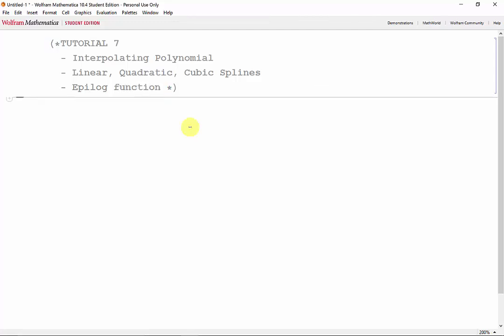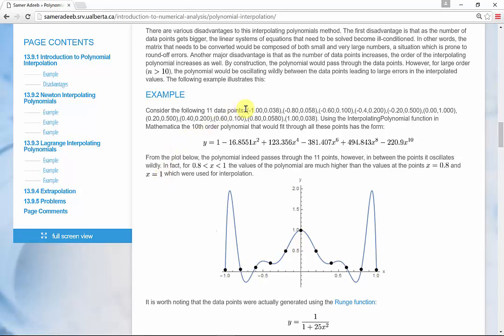The easiest way to enter relatively small sets of data is in a matrix. Here, I'll grab an example from the online notes.